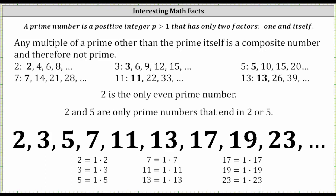Welcome to some interesting facts about prime numbers. A prime number is a positive integer greater than one that has only two factors, one and itself.